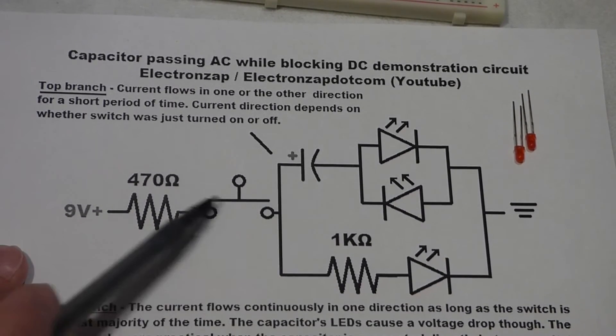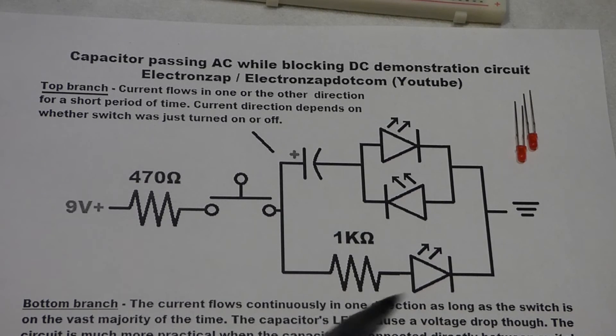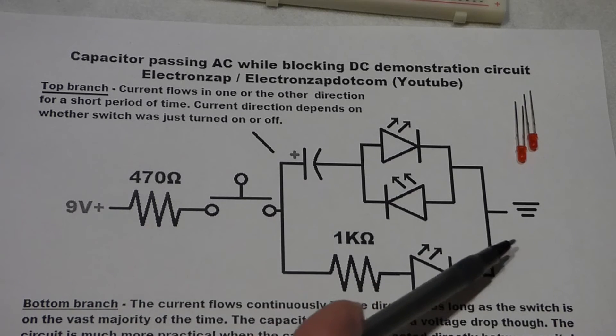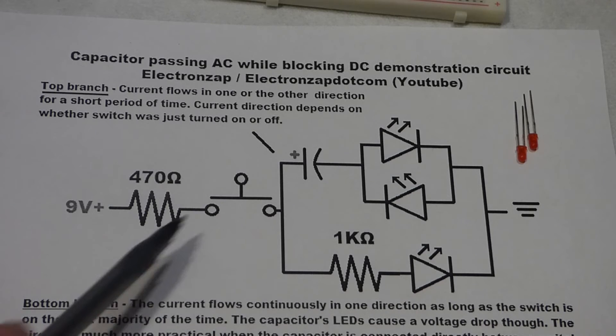Now, the rest of the circuit though, that was the direct current part. The battery's direct current, and so there was always current going through here when the switch was closed because of